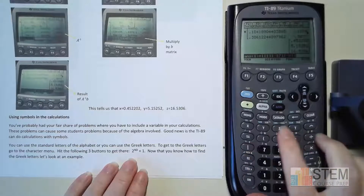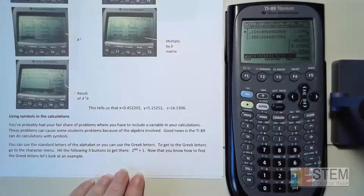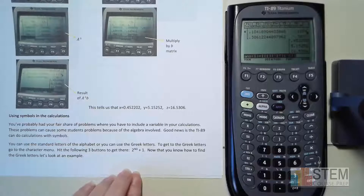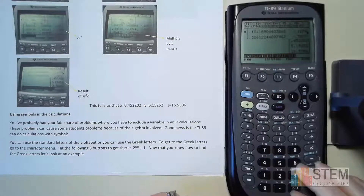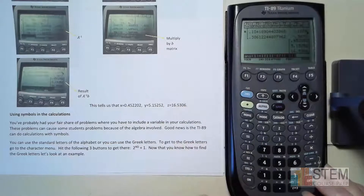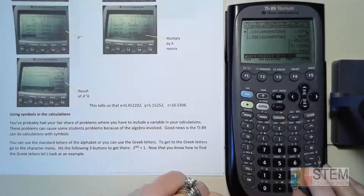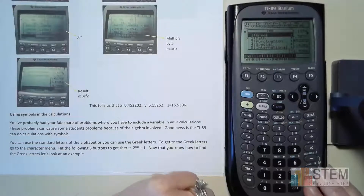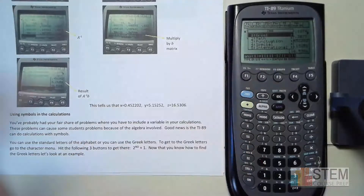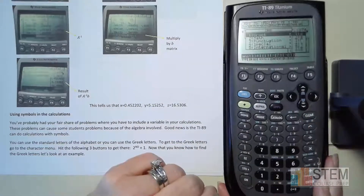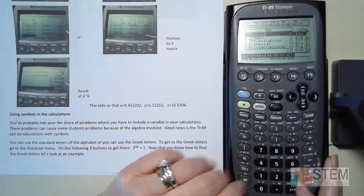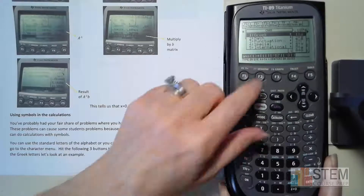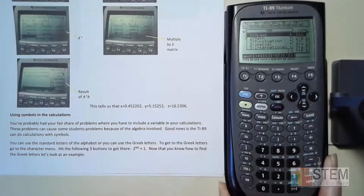You have standard letters x, y, z, t, and a through z. There are also Greek letters available. To find them, hit the second button, go to the character menu (CHAR+), then select Greek. You'll see all the Greek letters — for example, hit 1 to get alpha. That's how you find Greek letters if you want to use them.